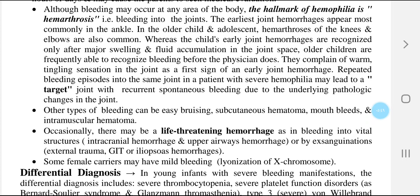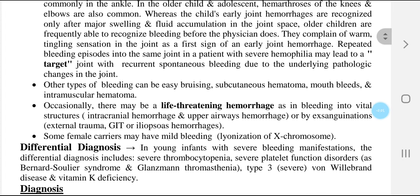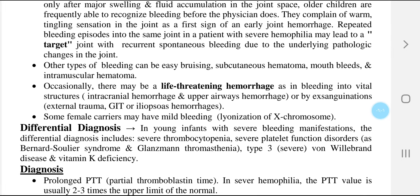Other types of bleeding include easy bruising, subcutaneous hematoma, mouth bleeds, and intramuscular hematoma. Occasionally there may be life-threatening hemorrhage, such as bleeding into vital structures like intracranial hemorrhage, upper airway hemorrhage, or from external trauma — including gastrointestinal or retroperitoneal hemorrhages. Some female carriers may have mild bleeding due to lionization of the X chromosome.